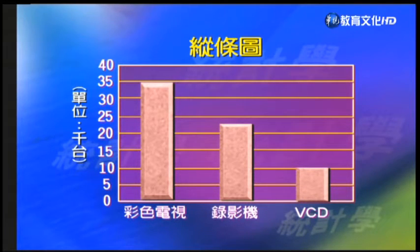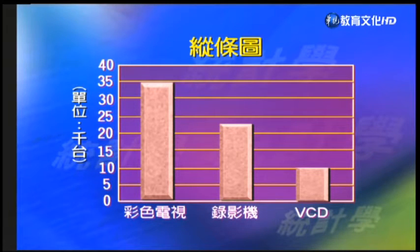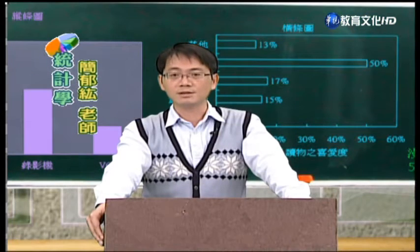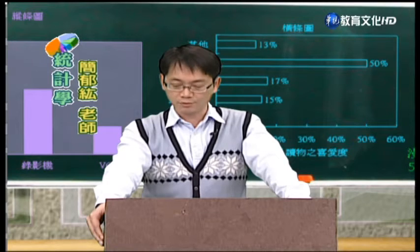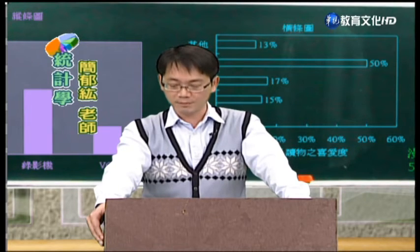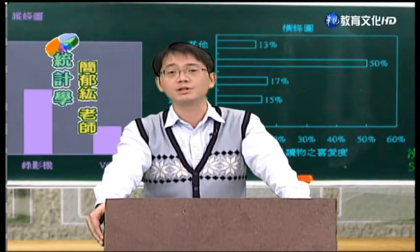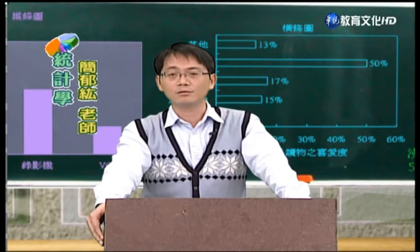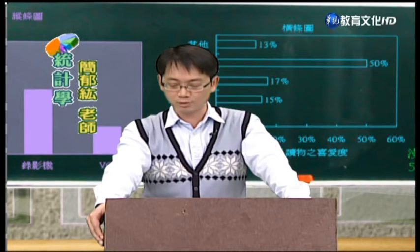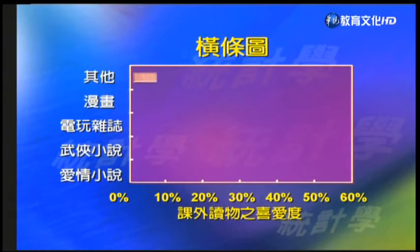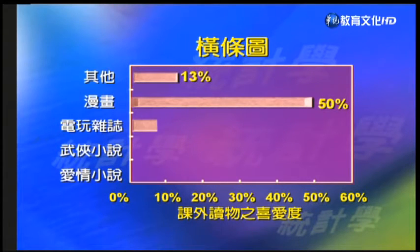我們首先來看下面這個例子。這是某電器廠商在某一年度有關彩色電視機、錄影機以及VCD播放器的銷售量統計，利用直條圖來做呈現。由這個直條圖可以看得出來，彩色電視機方面銷售量最多，而VCD播放器銷售量最少。除了這個例子之外，下一個例子是台北市教育局統計國中學生課後閱讀課外書籍的情形，可用橫條圖呈現。